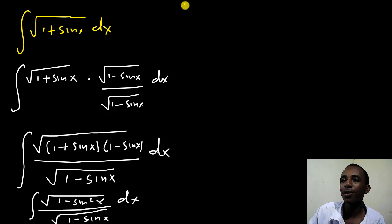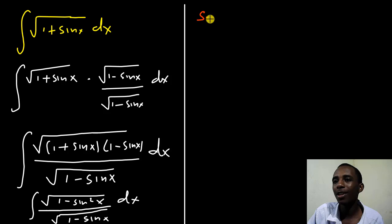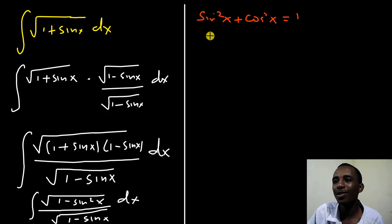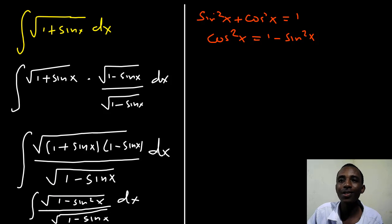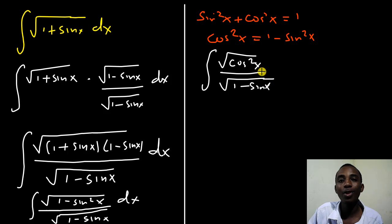From the Pythagorean trigonometric identity, we know that sine squared x plus cosine squared x equals 1, which means cosine squared x equals 1 minus sine squared x. So I substitute that inside the square root to get the square root of cosine squared x divided by the square root of 1 minus sine x. Note we cannot substitute for the denominator because it is sine x, not sine squared x.